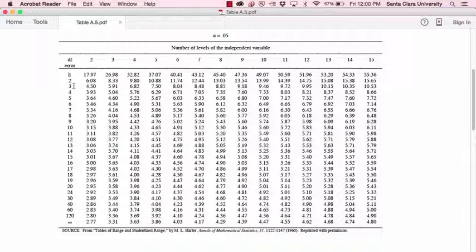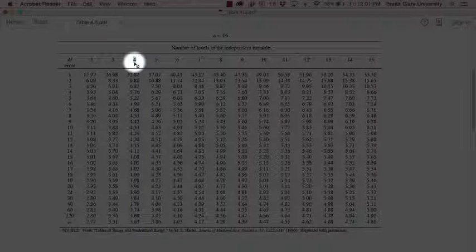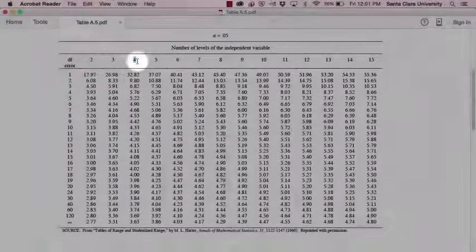So let's take a look at how to use this to find a critical Tukey value. Suppose that I performed an ANOVA and I was comparing four different groups. And each group had, let's say, five people in it. The column that I would look at would be this one, because the number of levels of the independent variable is four, so that's the column that I'm using.